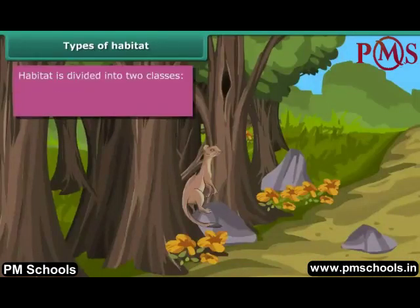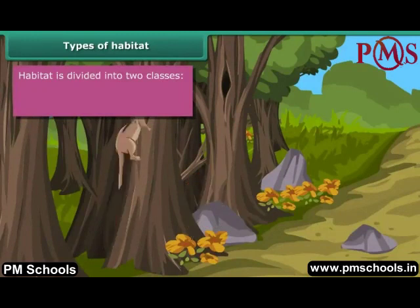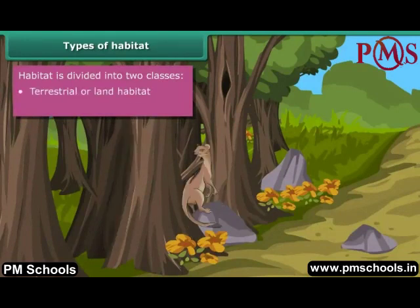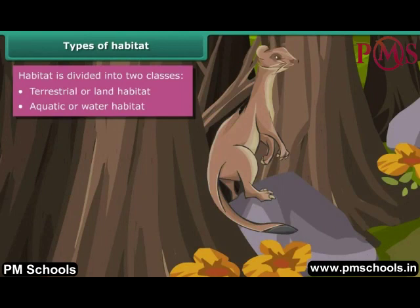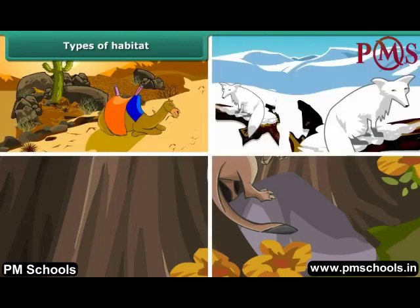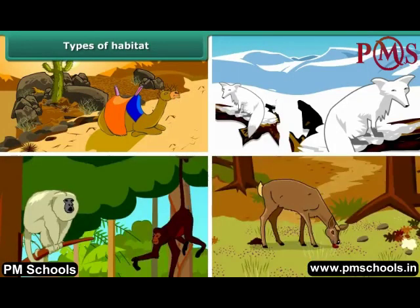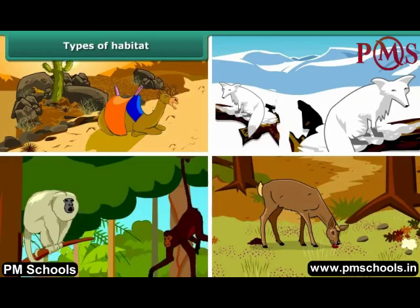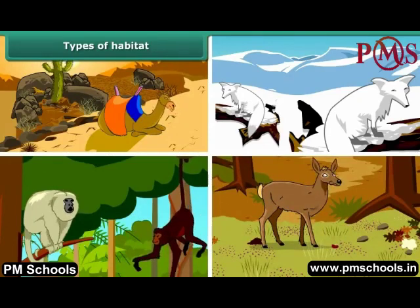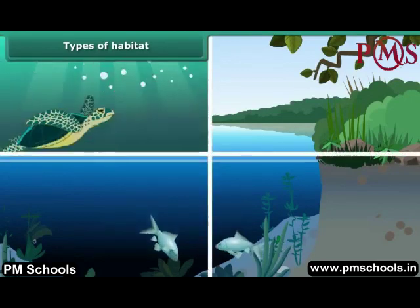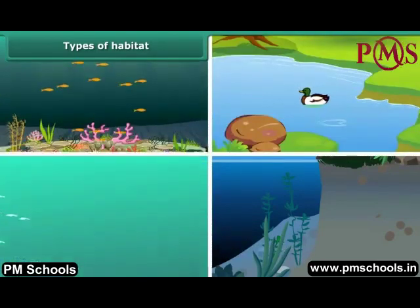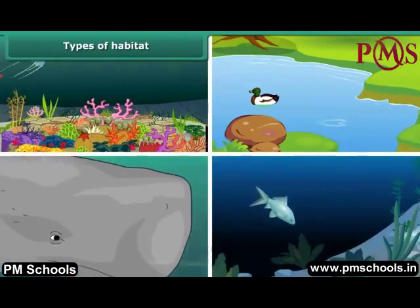Habitat is divided into two classes: terrestrial or land habitat, and aquatic or water habitat. The habitat of living organisms found on land is terrestrial habitat. Desert, mountains, forest, and grasslands are examples of this category. The habitat of living organisms found in water is aquatic habitat. Sea, ponds, oceans, and lakes are examples of this category.